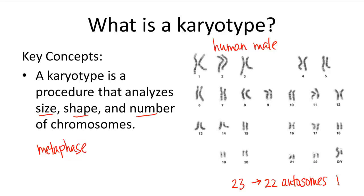One pair is the sex chromosomes right here. You can tell this is a male human because there is an X and Y chromosome present — this is the X, this is the Y — and notice how the Y is a lot smaller. In females, there would be two X chromosomes present.